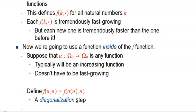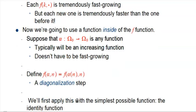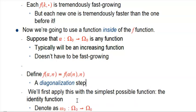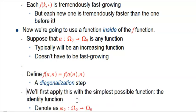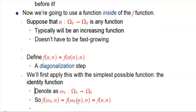I'll show you a picture in a little bit of why the word diagonalization comes in. The first thing we're going to do is apply it with the simplest possible function: the identity function. We'll denote that using lowercase omega. Omega-naught is just the identity function — omega-naught of n just equals n.